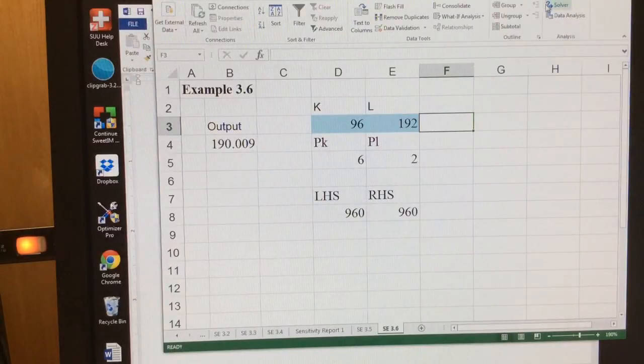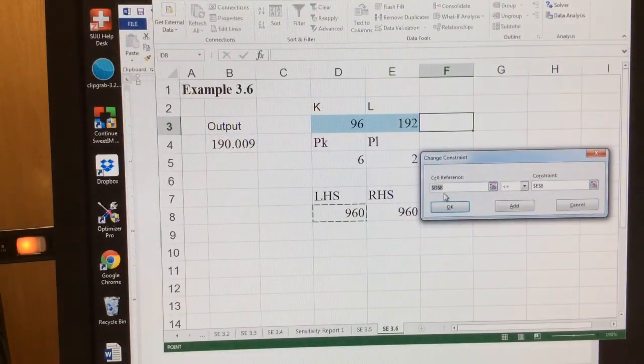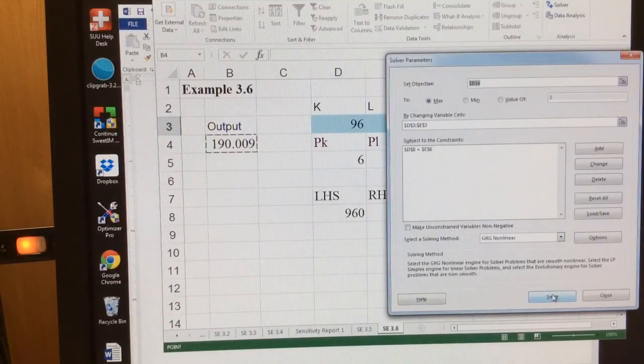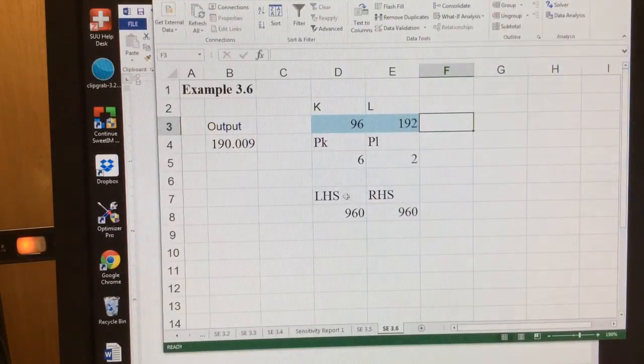Or the other thing to note is we can change our constraint. So it's not less than or equal to, but if we said exactly equal to, and then click OK, we're always going to have binding constraints. And so I click OK, and I'll get the right answer that way.